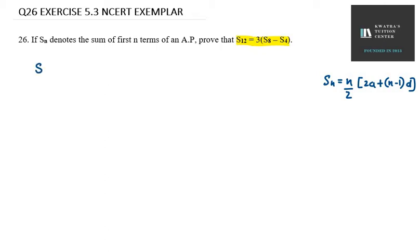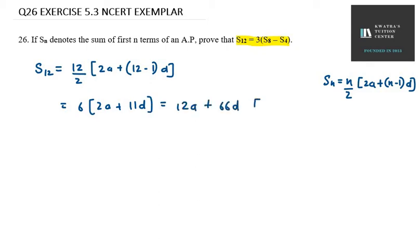We will be finding S12. S12 will be 12 over 2 in bracket 2a plus n minus 1, that is 12 minus 1d. We get 12 over 2 are 6, 6 into 2a plus 11d. This will be 12a plus 66d. This is my left-hand side.